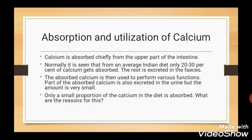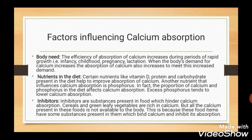Absorption and utilization of calcium: calcium is absorbed from the upper part of the intestine. Of the total calcium we consume, only 20–30% gets absorbed and the rest is excreted in the feces. The absorbed calcium is used to perform various functions, and some part of it is also excreted in urine, though in very small amounts. Calcium absorption depends on three factors: body need, nutrients in diet, and inhibitors in diet.